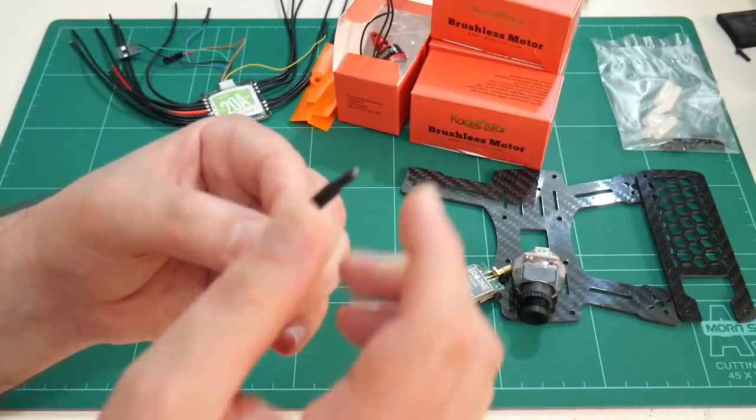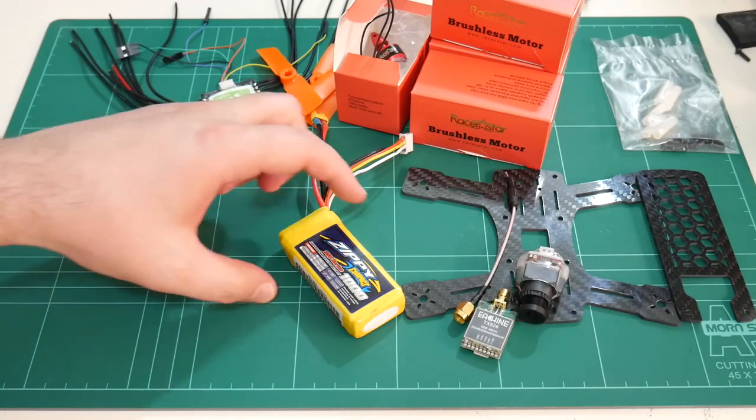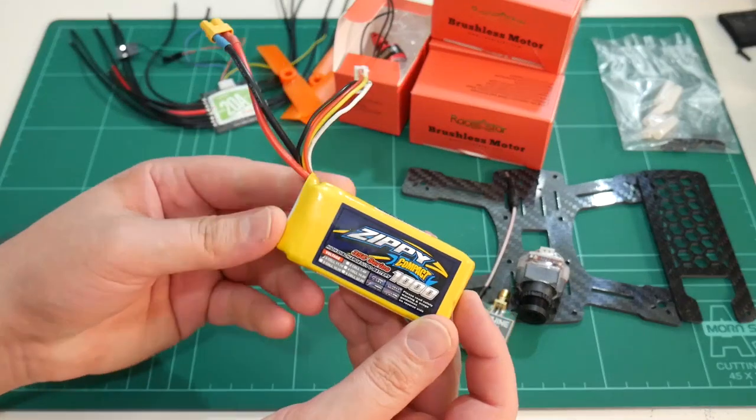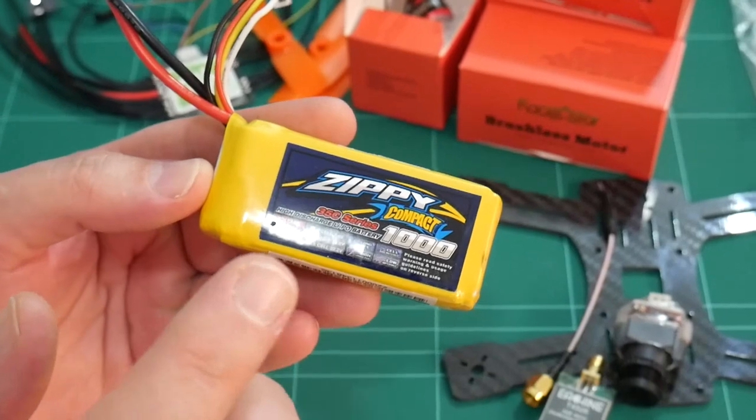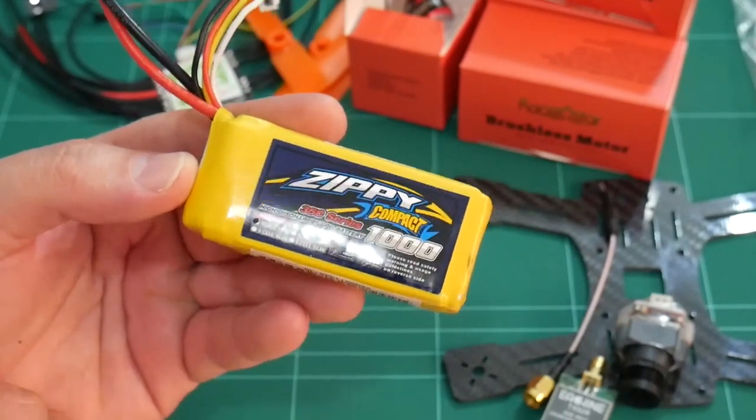With regards to the battery, I'll be using the same batteries that I currently have and the batteries that I have been using on the Peon 230 - 3 cell 1 amp Zippy Compact 35C.